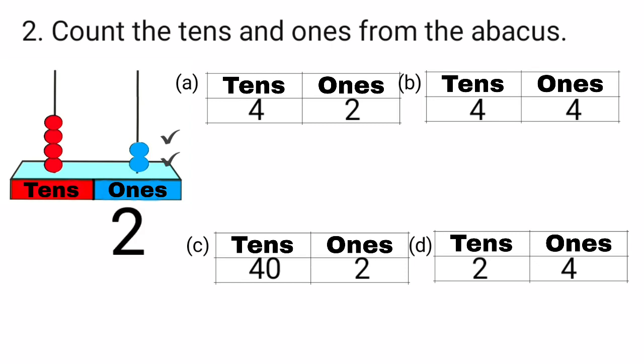Now we will count the beads in the tens rod. Yes, beads in the tens rod: 1, 2, 3 and 4. Tens rod has 4 beads. It means 4 tens are there.